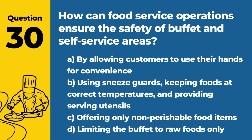Question 30. How can food service operations ensure the safety of buffet and self-service areas? Answer: B. Using sneeze guards, keeping foods at correct temperatures, and providing serving utensils. These measures help maintain food safety by protecting food from contamination and temperature abuse.